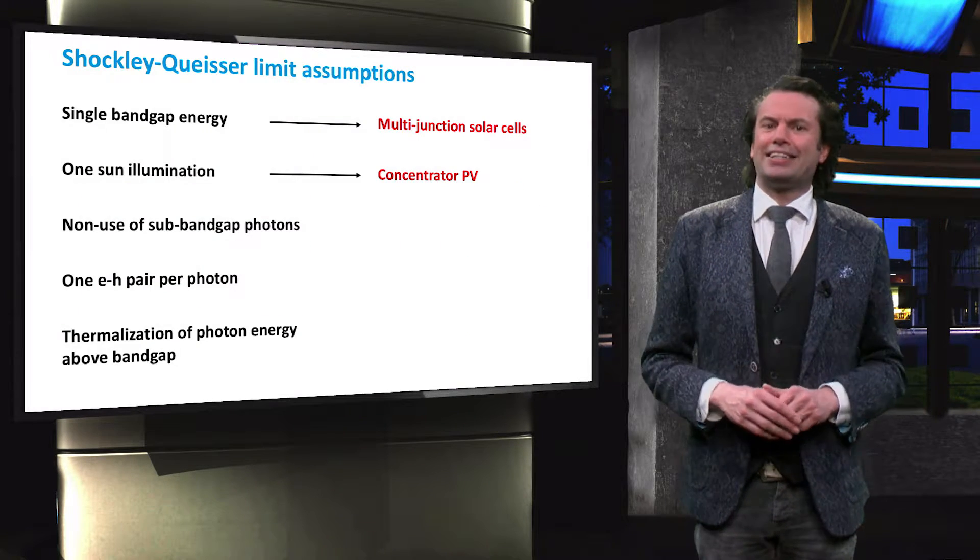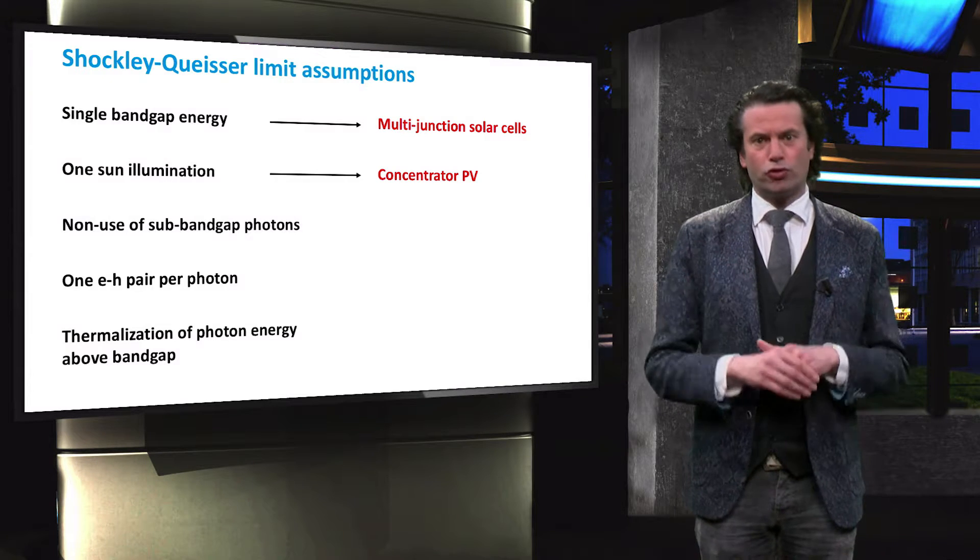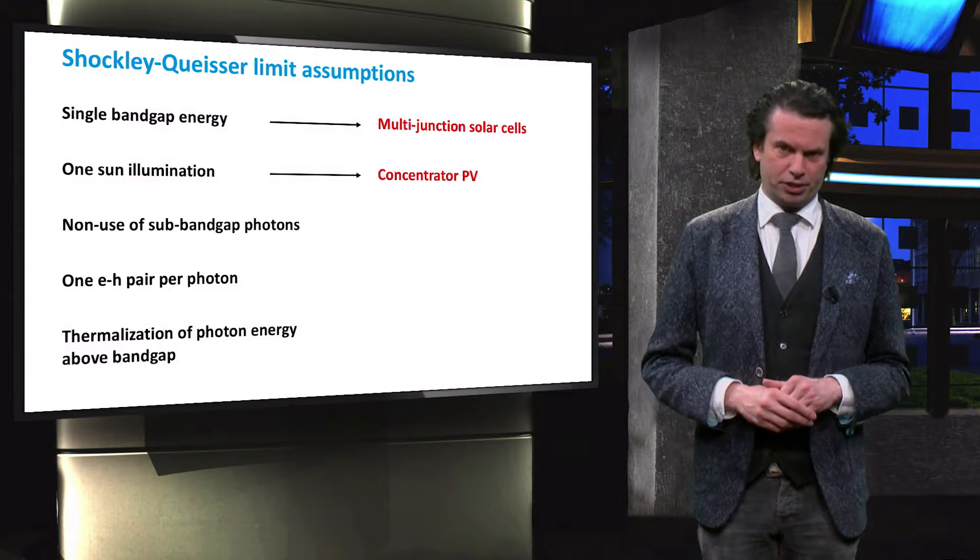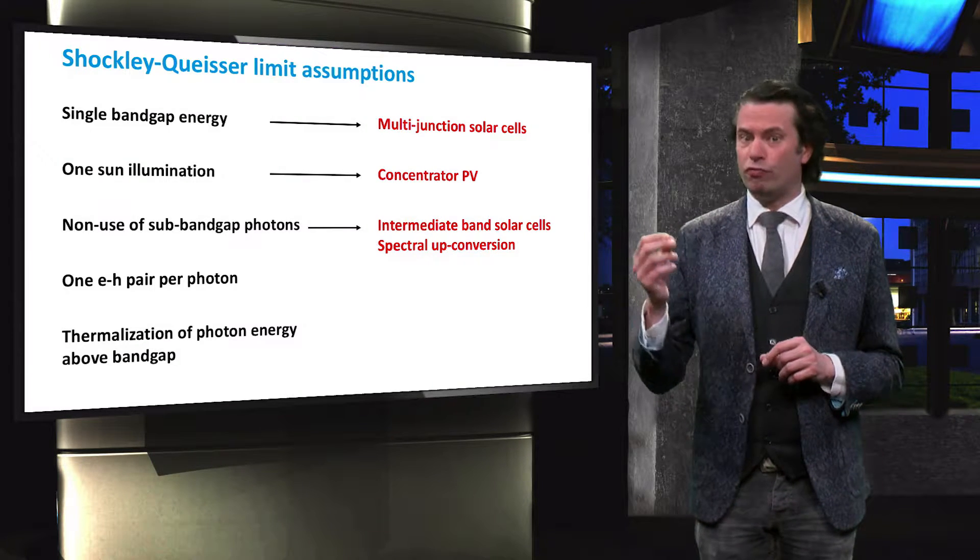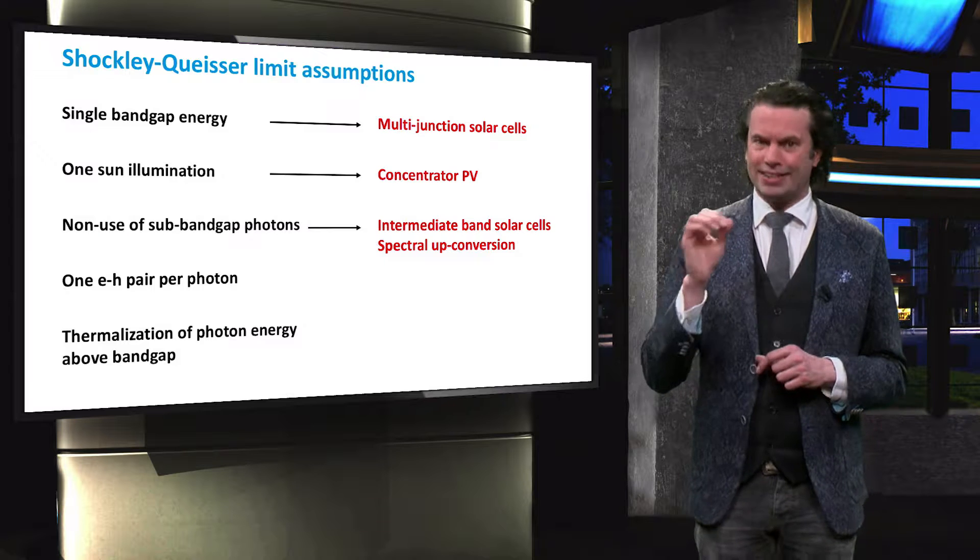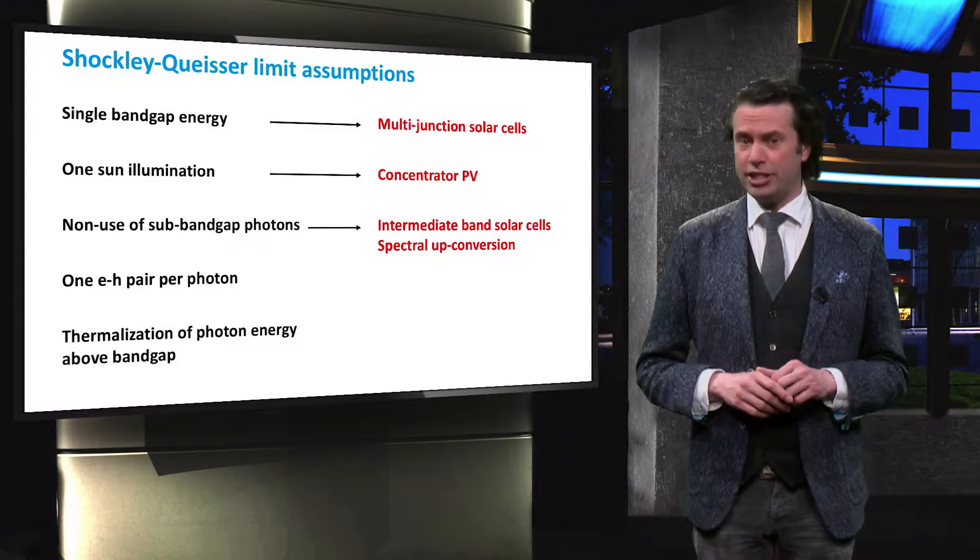The third assumption is that the single junction solar cell is transparent to photons with an energy below the bandgap energy. Intermediate band solar cells and spectral up-conversion are two concepts that tackle this assumption. Let's look into these concepts.